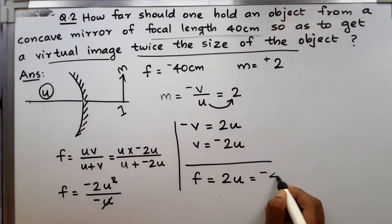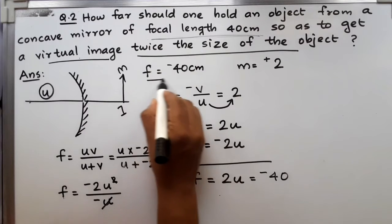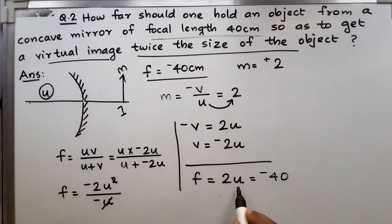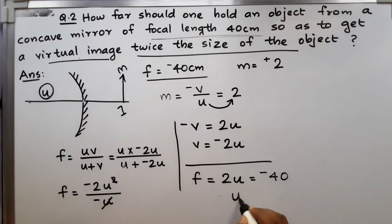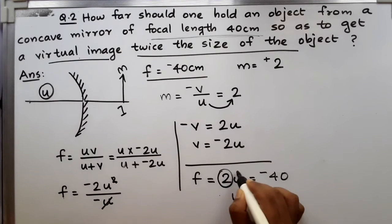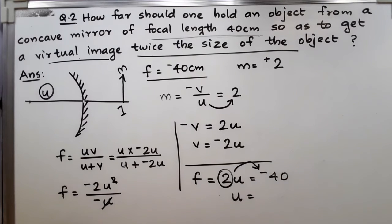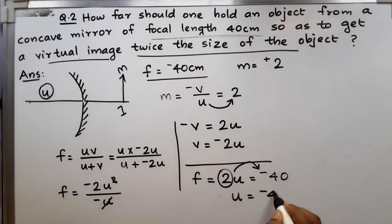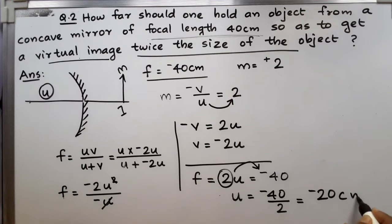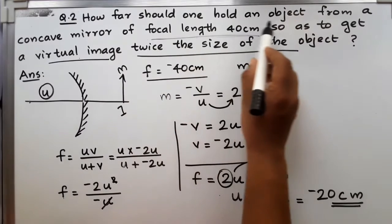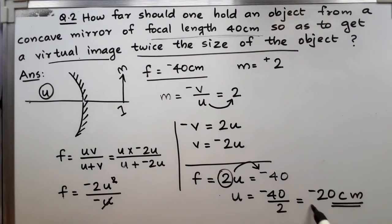F is equal to 2U, and F is given as minus 40. So 2U = minus 40. Taking 2 to the other side: U = minus 40 divided by 2 = minus 20 centimeters. The object should be held 20 centimeters away from the concave mirror.